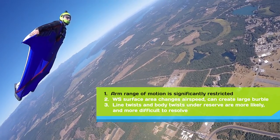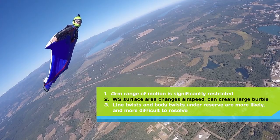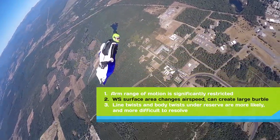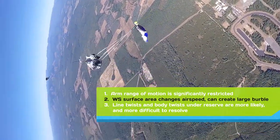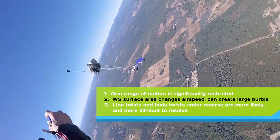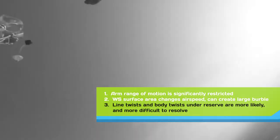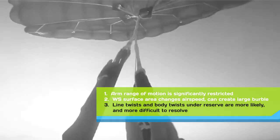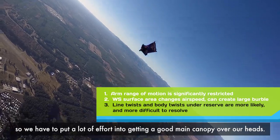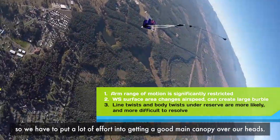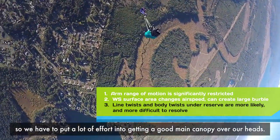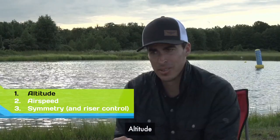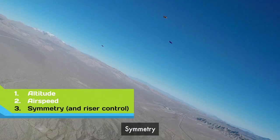Our arms are restricted. We have a massive amount of surface area that can change our airspeed or create a burble that can make our reserve pilot chute less effective. We're much more prone to having line twists or body twists under our open reserve. So we have to put a lot of effort into getting a good main canopy over our heads. There are three critical factors: altitude, airspeed, and symmetry.